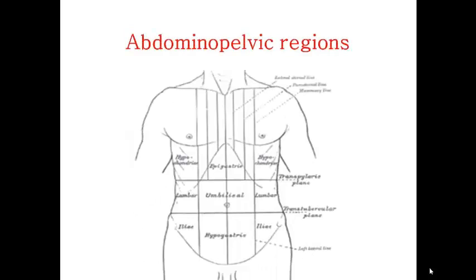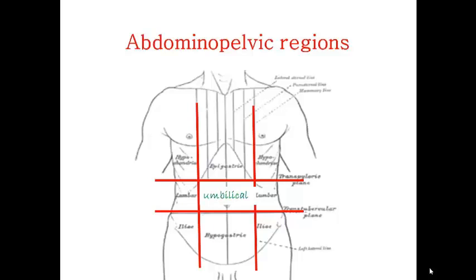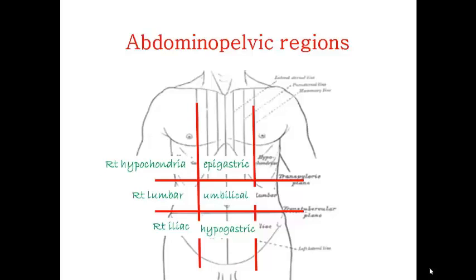The abdominal pelvic region is divided into nine small regions or compartments by two vertical planes, known as the subclavicular lines, and two horizontal planes, known as the subcostal and the intertubercular lines. These nine compartments are the umbilical, the epigastric, the hypogastric, the right hypochondria, the right lumbar, the right iliac, the left hypochondria, the left lumbar, and the left iliac.